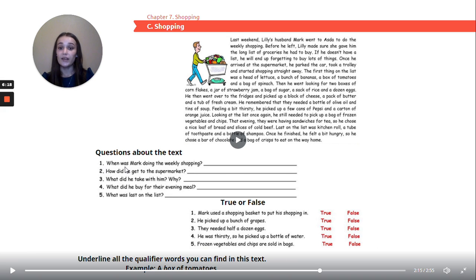Question number one. When was Mark doing the weekly shopping? Question number two. How did he get to the supermarket? Question number three. What did he take with him and why? Question number four. What did he buy for the evening meal? Question number five. What was last on the list?